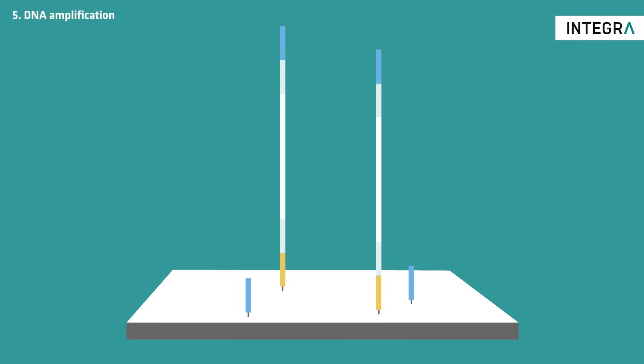The sequencing process can now begin. A sequencing primer complementary to the primer binding site adapter on the flow cell is added. The following process is very similar to a standard PCR cycle.